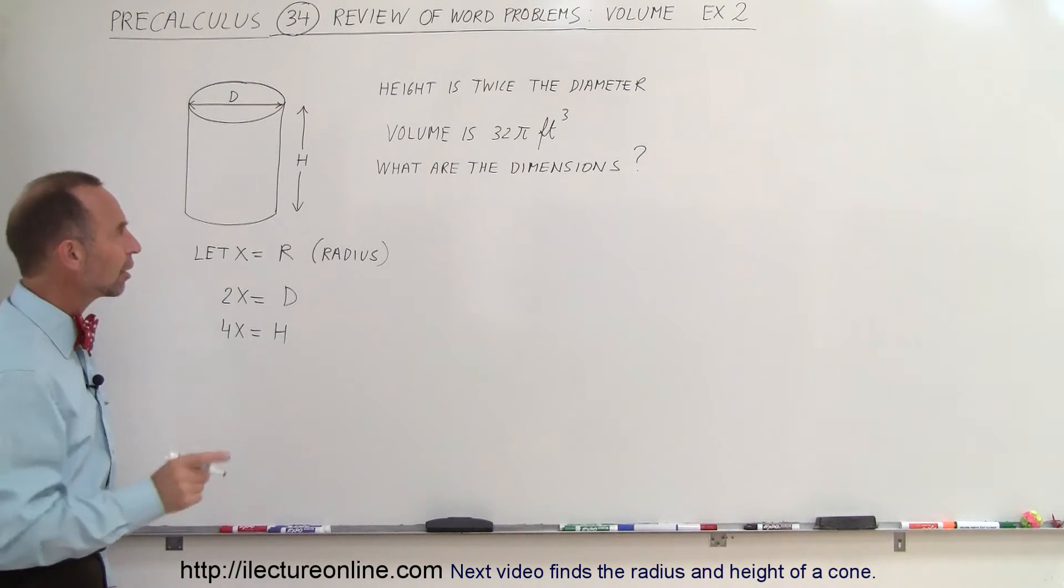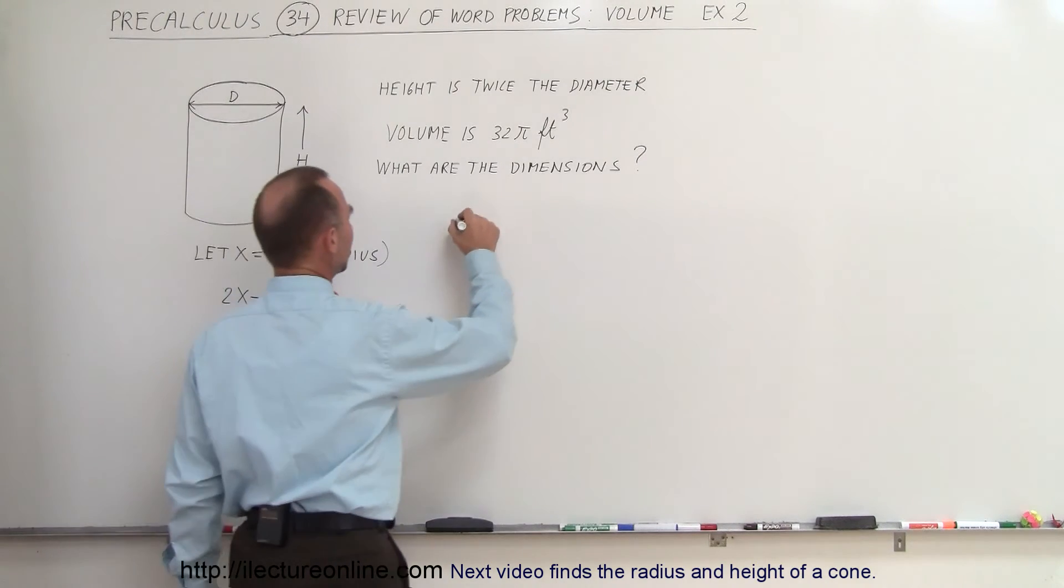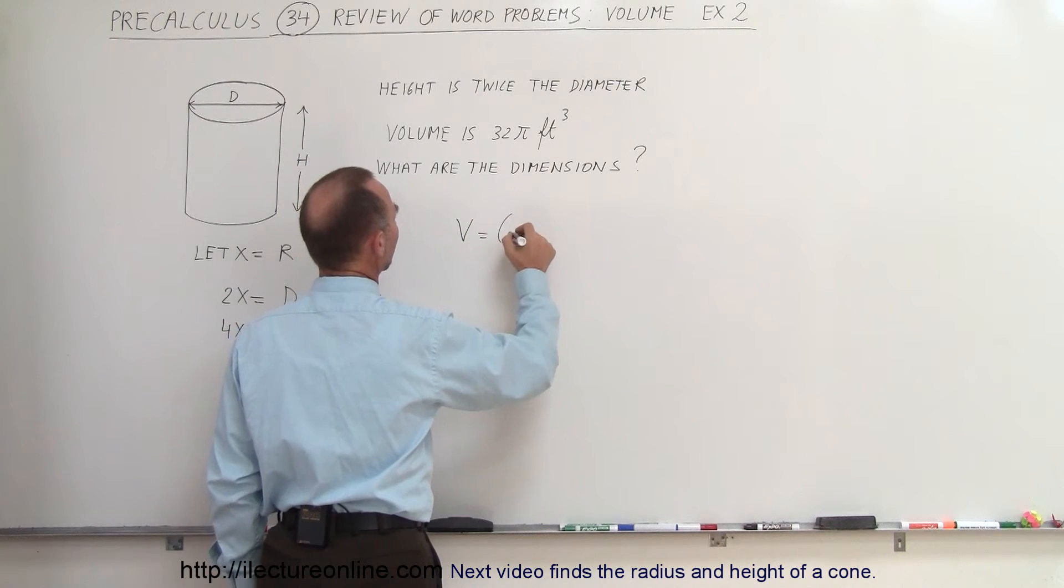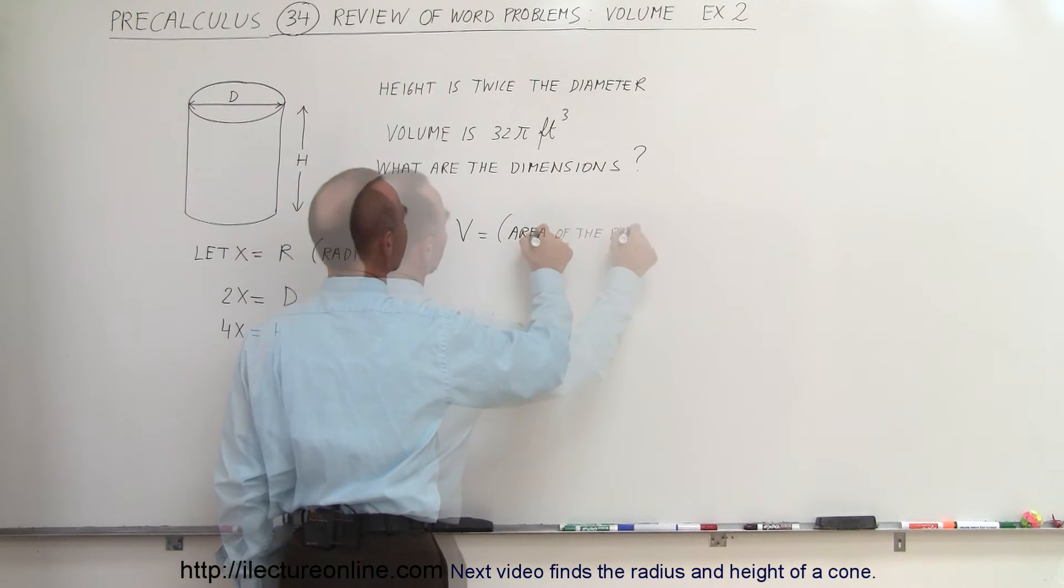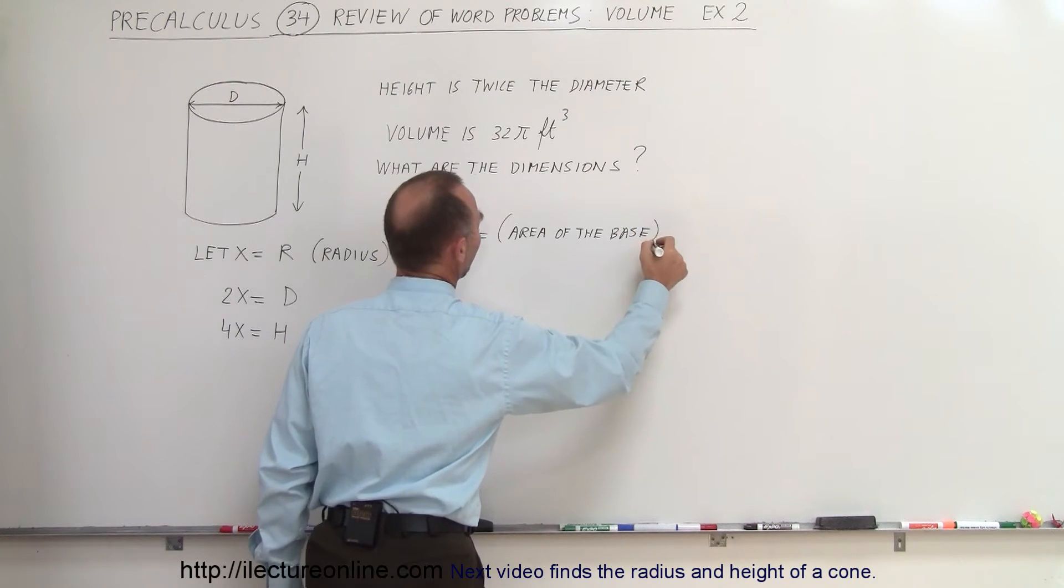Now we need an equation for the volume of a cylinder. We know that the volume is equal to the area of the base times the height.